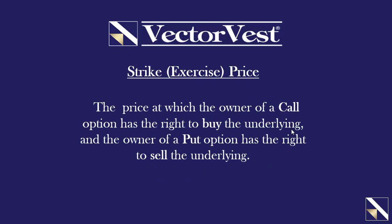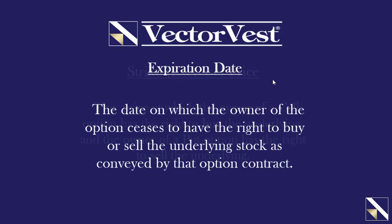The certain price is called the strike price — it's the price at which the owner of a call option has the right to buy the underlying asset, and the owner of a put option has the right to sell the underlying asset. That's where you strike the deal. The expiration date is the date on which the owner of the option ceases to have the right to buy or sell the underlying stock as conveyed by that contract.